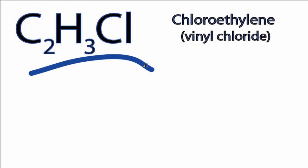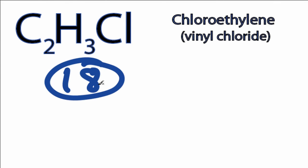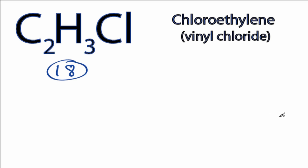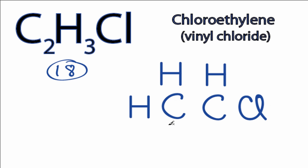For C2H3Cl, we have a total of 18 valence electrons. Hydrogens always go on the outside of Lewis structures. Looking at the carbon and the chlorine, carbon is less electronegative, so we'll put the carbons at the center and the hydrogens and the chlorine around it. We have a total of 18 valence electrons for the C2H3Cl Lewis structure.